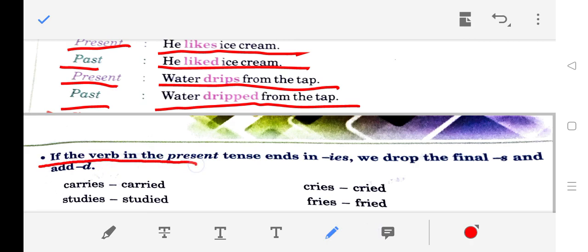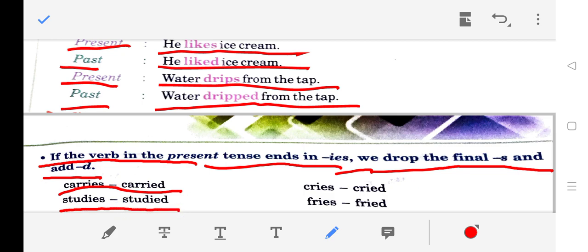If the verb in the present tense ends in 'ies', we drop the final 's' and add 'd'. Carries - carried. Studies - studied. Cries - cried.